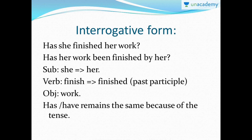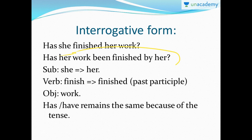Now let's move on to the interrogative form — the question format. 'Has she finished her work?' It is still present perfect because we have 'has.' The subject is 'she,' the verb is 'finished,' the object is 'her work.' Since 'work' is singular, we use 'has.' In passive voice it becomes: 'Has her work been finished by her?' — 'she' comes at the end as 'her.' 'Has' or 'have' remains the same because of the tense.